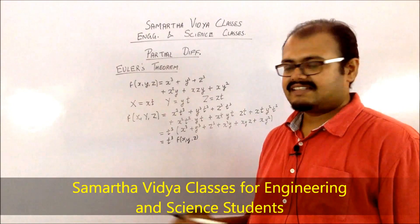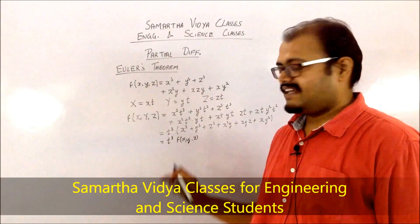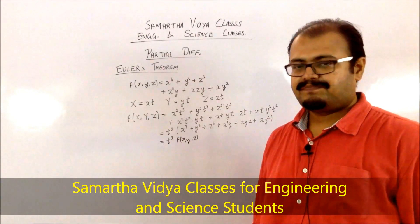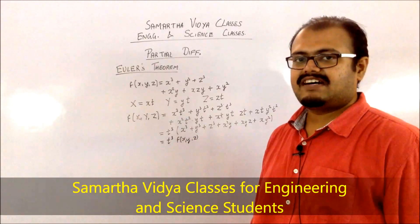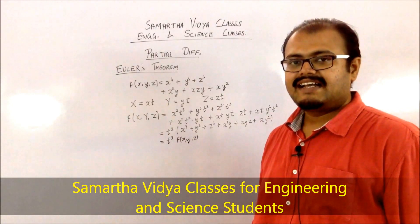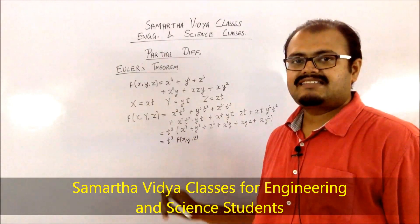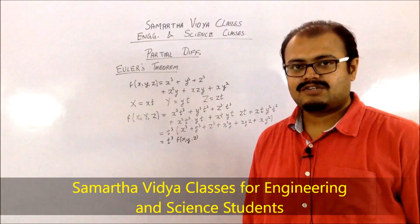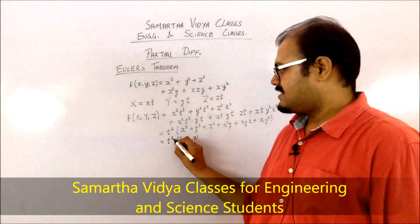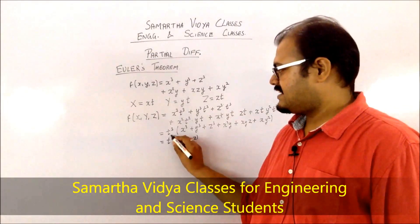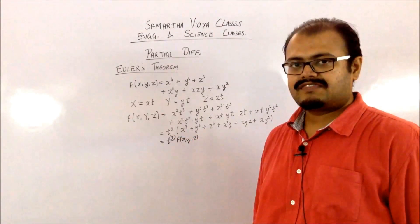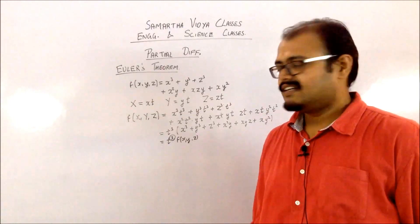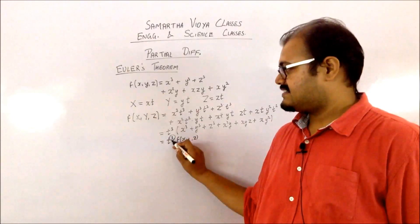So when you are getting t raised to some value common outside and the original function inside the bracket, then you say that the function is homogeneous. The degree is represented by the power of t. In this case, you are getting t cube, so it is a homogeneous function of degree 3.